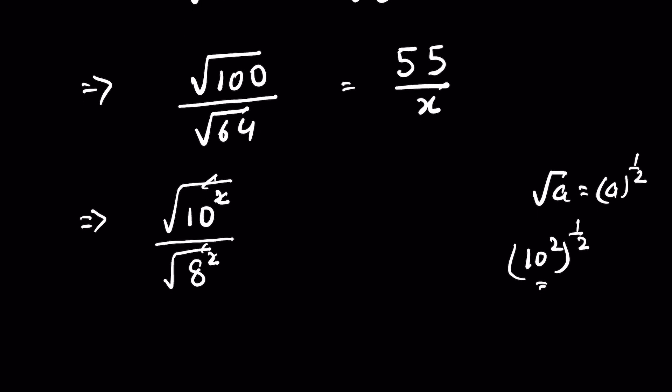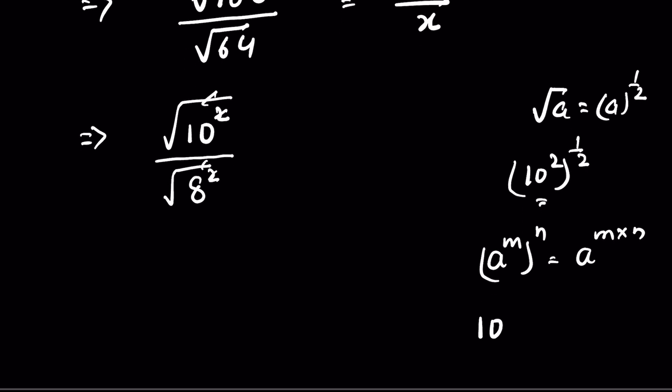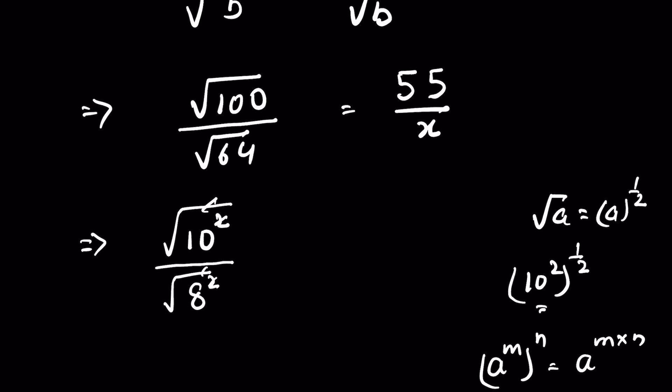So when 10 square is raised to the power of 1 upon 2, this means it is in the form of a raised to the power m, whole raised to the power n, and it is equal to a raised to the power m times n. This will be 10 raised to the power 2 times 1 upon 2. Now this 2 and this 2 gets cancelled.